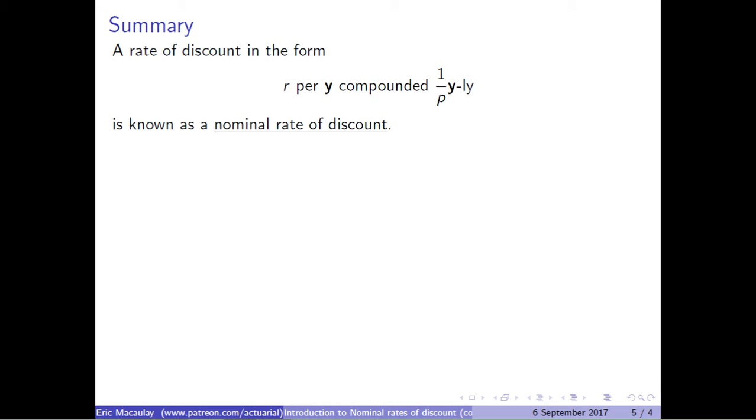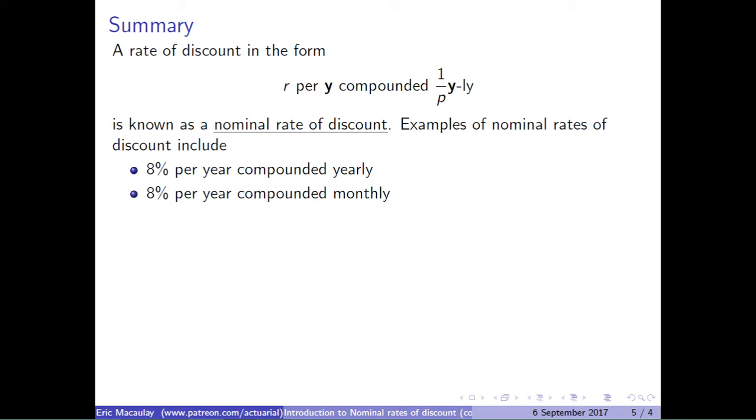A rate of discount in the form r per y compounded 1 over p yearly is known as a nominal rate of discount. Examples of nominal rate of discount include 8% per year compounded yearly, 8% per year compounded monthly, 2% per year compounded quarterly.